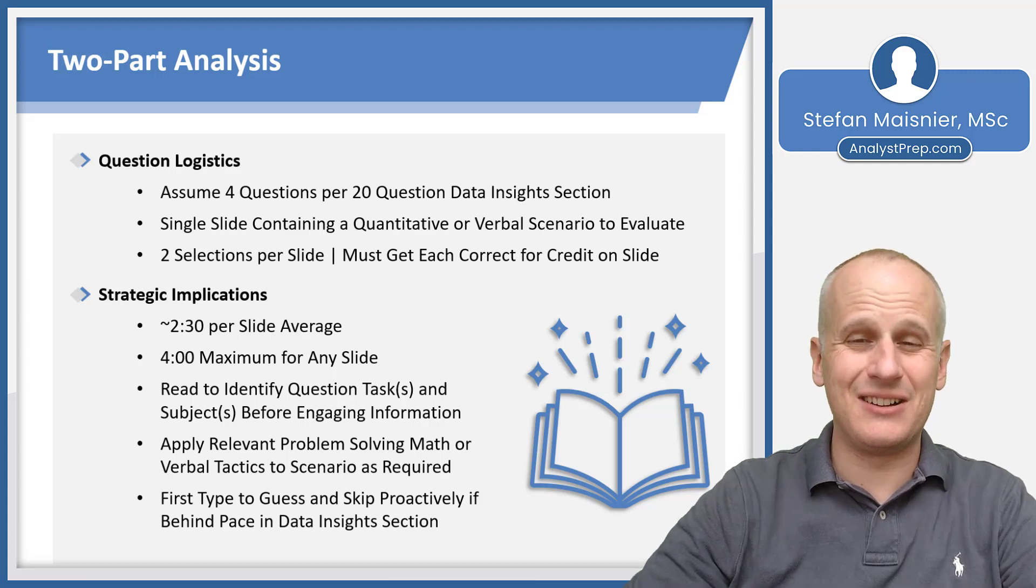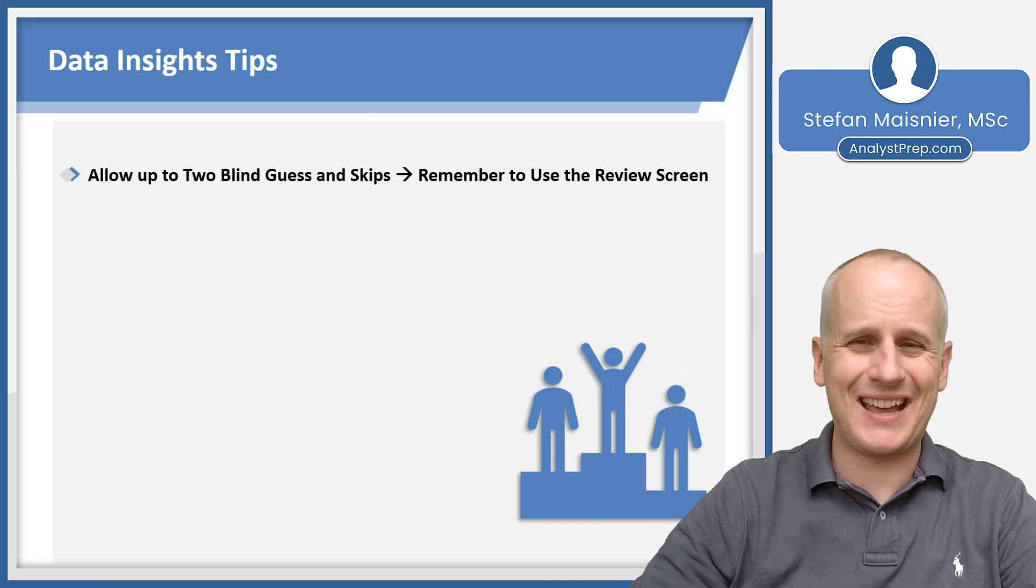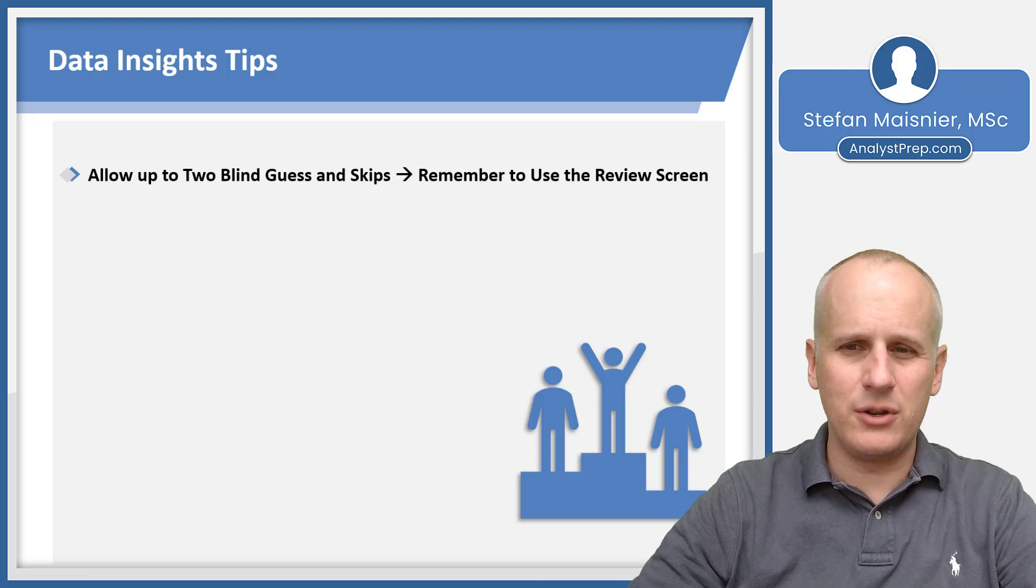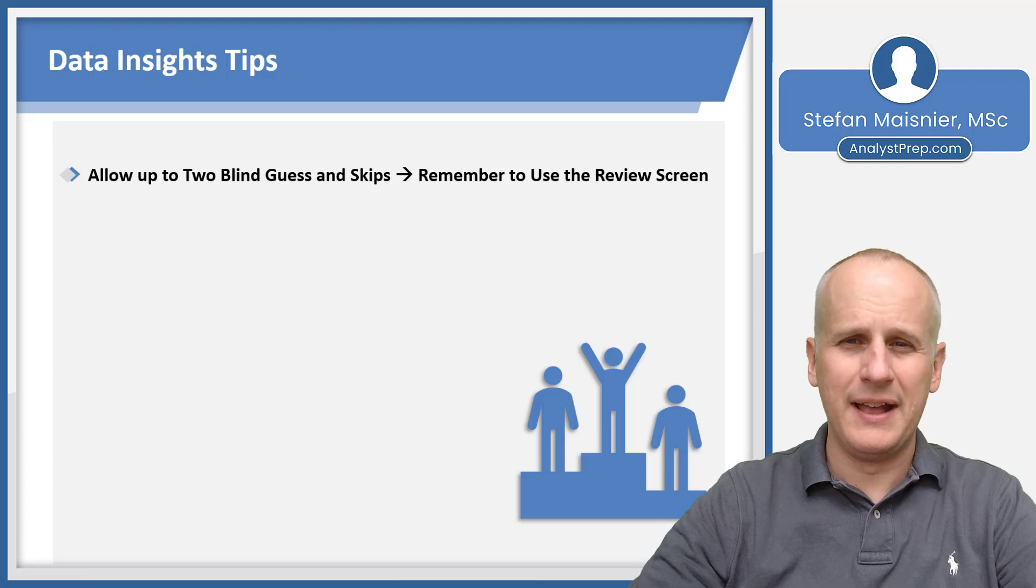So let's now just talk about some overall tips for the data insights section. First, as we were just discussing, you can allow some skips tactically to make sure you finish the entire section. You can allow up to two blind guessing skips probably on those two-part analysis style questions. And then remember to use the review screen where you can change up to three questions. Do allow yourself at least one on the fly skip, however, through the section, just in case something you know how to do is escaping you in the moment and ideally just pace well throughout.